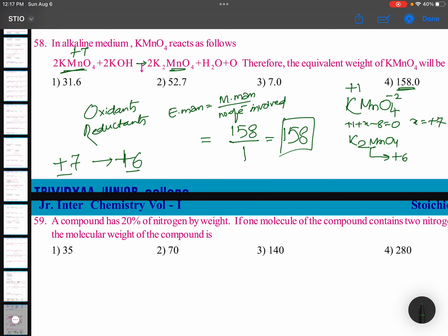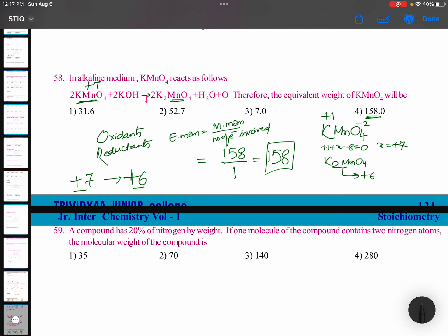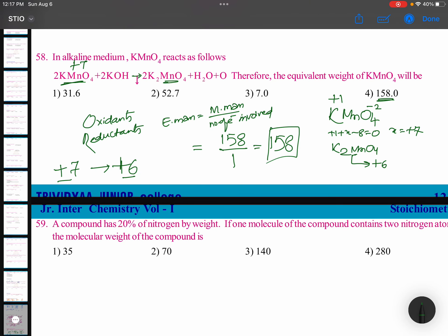Coming to 59: A compound has 20 percentage of nitrogen by weight. If one molecule of this compound contains two nitrogen atoms, this is very interesting. I will make it nitrogen atoms. The molecular weight of the compound is very simple.